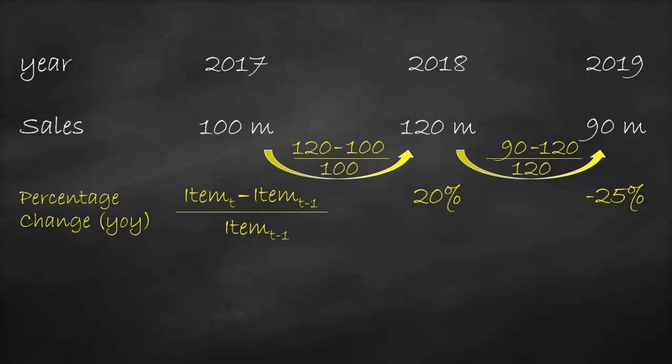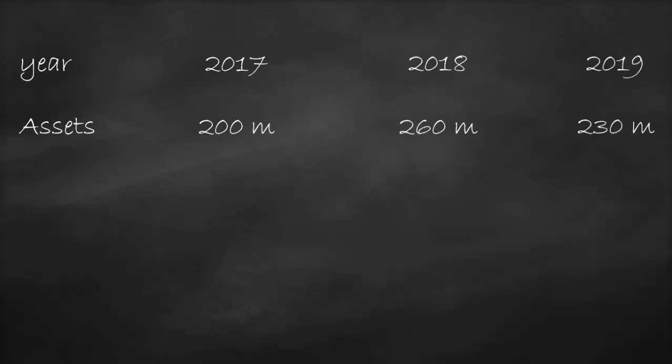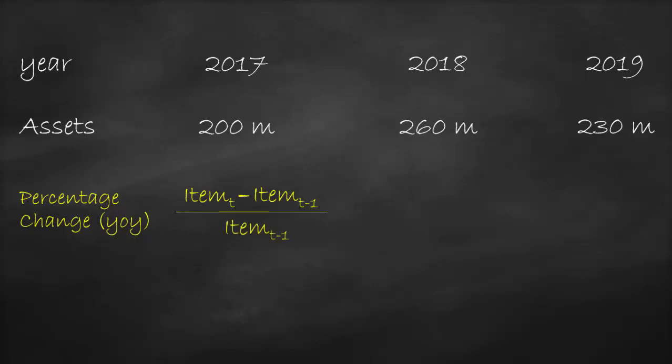Let's apply the percentage change from year to year to the following example for the balance sheet. A company has assets in 2017 of $200 million, assets in 2018 of $260 million, and assets in 2019 of $230 million. To compute the percentage change we use new minus old divided by old. So the percentage change in 2018 is $260 million minus $200 million, all divided by $200 million, which is equal to 30%.